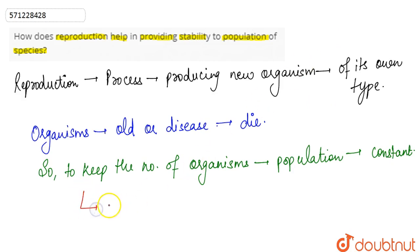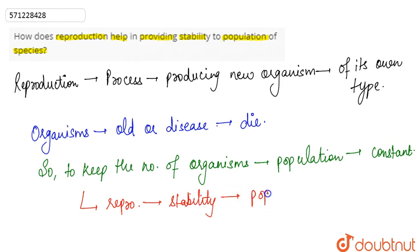This is how reproduction provides stability to the population. Whatever number of organisms die, the number remains constant because of the reproduction carried out by the same population for maintaining the number and producing progeny. This is how the number of individuals remains constant in a population.